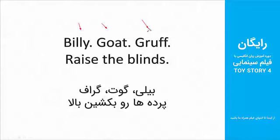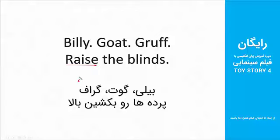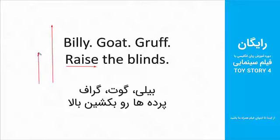بچه‌ها، Billy و Goat و Gruff اسم اون سه تا گوسفنده‌ای هستن که به هم چسبیدن. Raise به معنای بالا بردنه. ما یه دینا Raise هم داریم که میشه بالا رفتن، مثلاً خورشید بالا میره. پس ما یه Raise داریم به معنای بالا رفتن و یه Raise داریم به معنای بالا بردن.